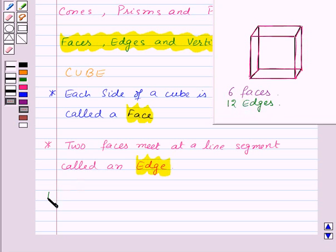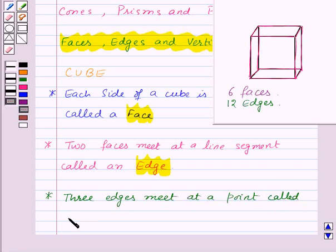Next, three edges meet at a point called a vertex.